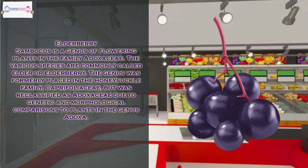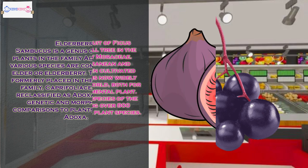Sambucus is a genus of flowering plants in the family Adoxaceae. The various species are commonly called elder or elderberry. The genus was formerly placed in the honeysuckle family, Caprifoliaceae, but was reclassified as Adoxaceae due to genetic and morphological comparisons to plants in the genus Adoxa.